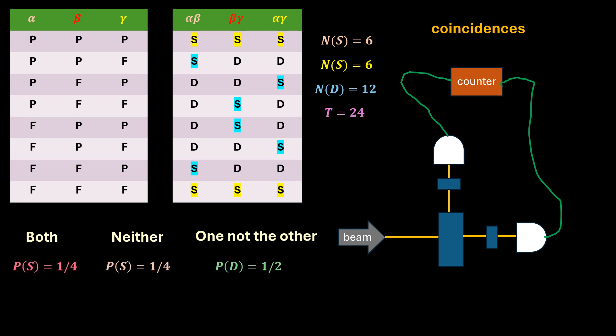Now, for the Bell setup. Which of these outcomes is the counter measuring? Clearly, the ones where you have the same outcome with photons going through both filters. And the probability that you will get those results is one fourth. And that is exactly what the experiment reveals.